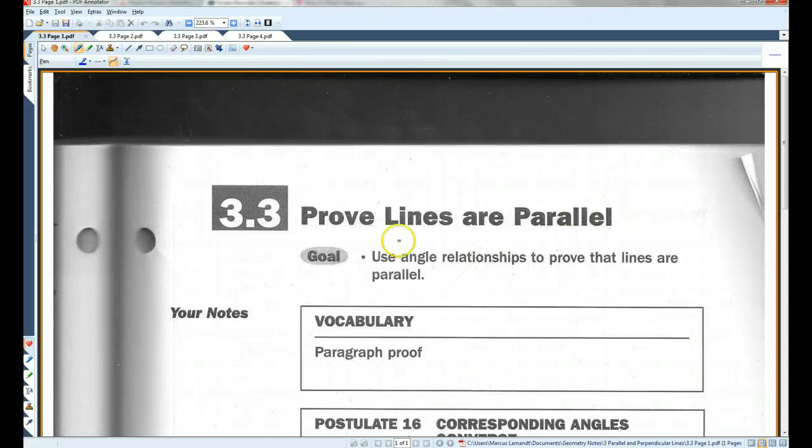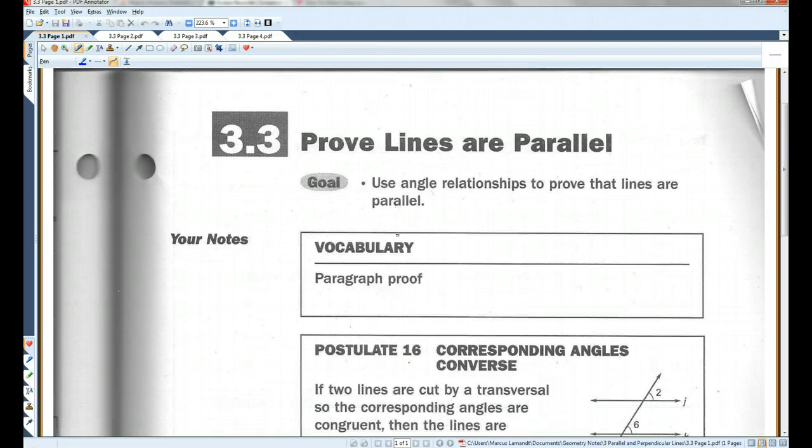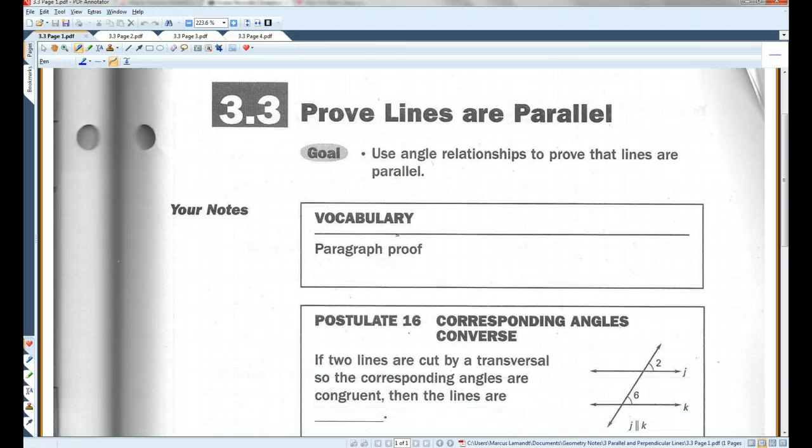Alright you guys, if you could please turn to 3.3, Proof Lines are Parallel. Alright, up until now, we have only done proofs that are done in two columns.